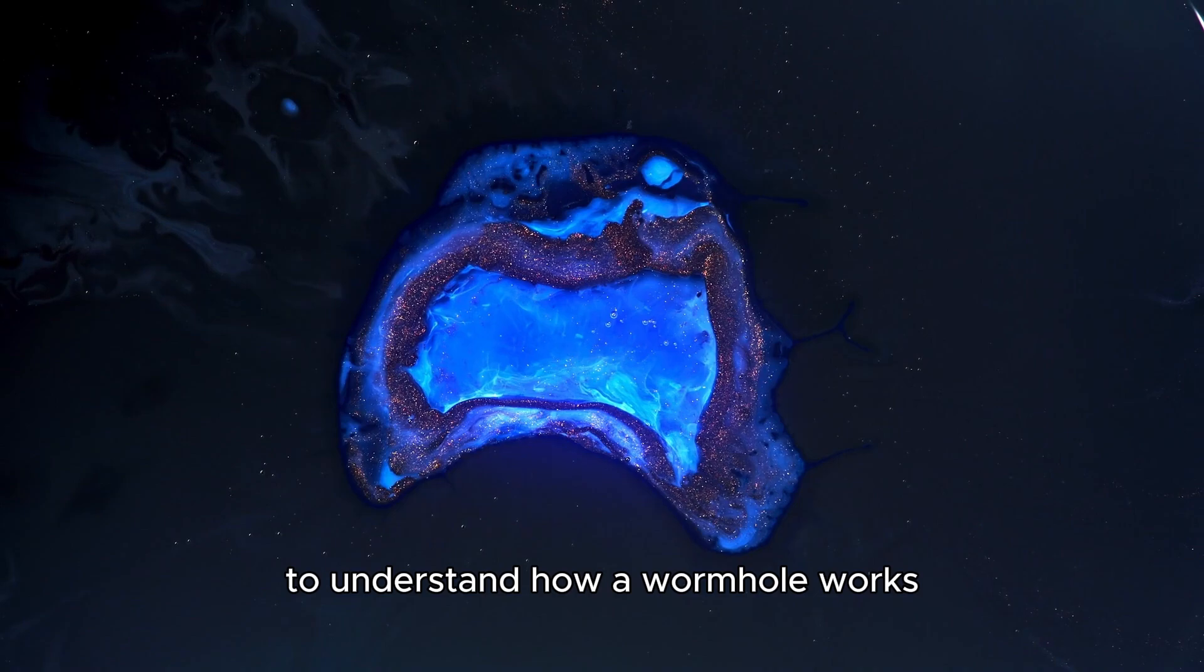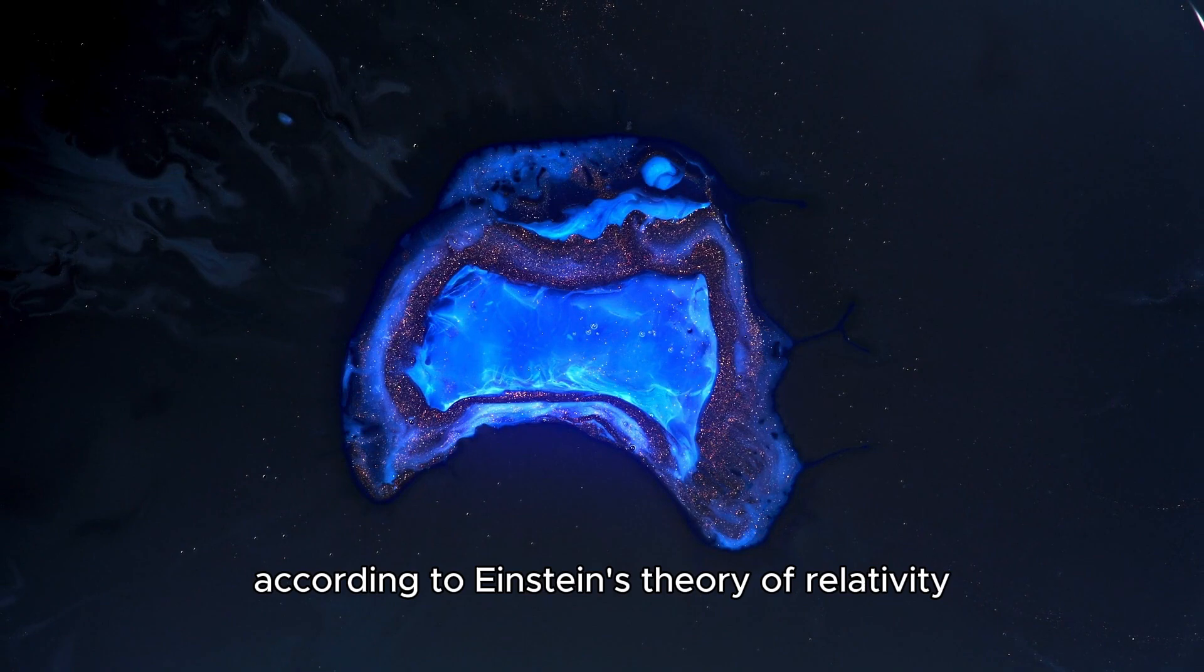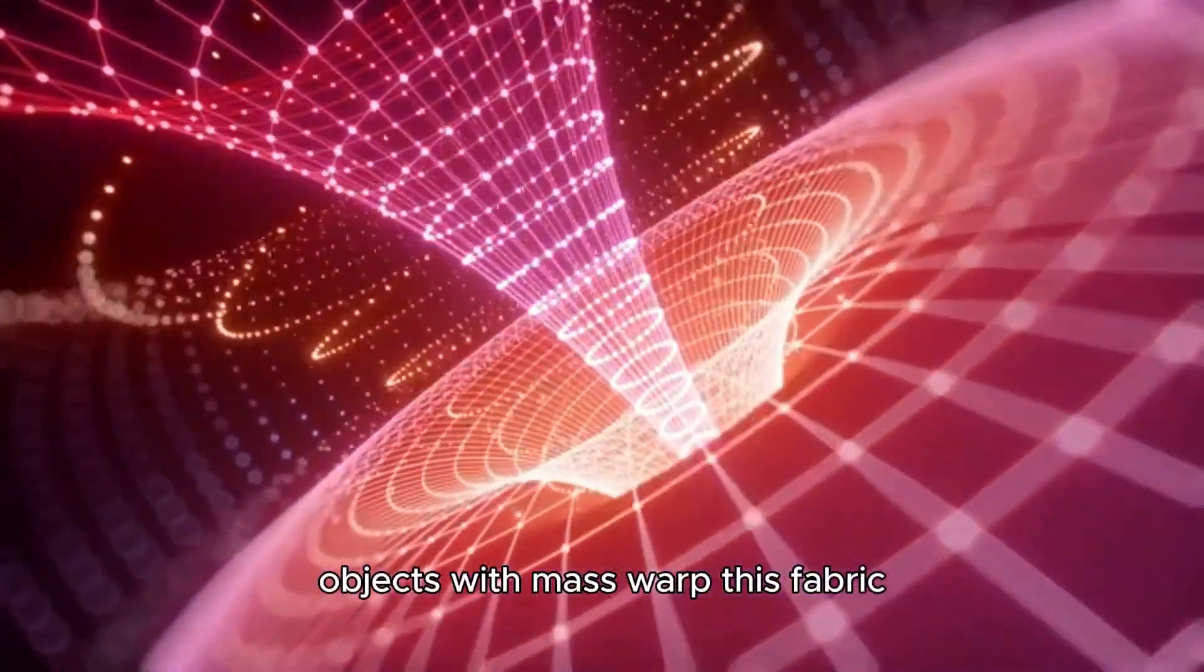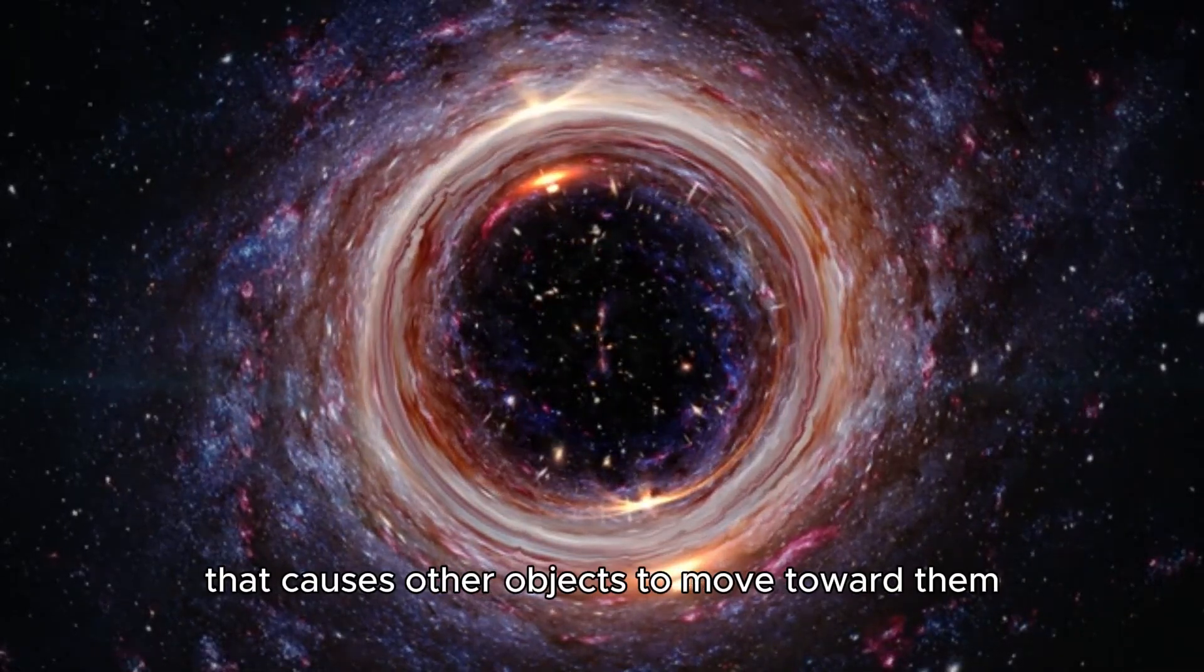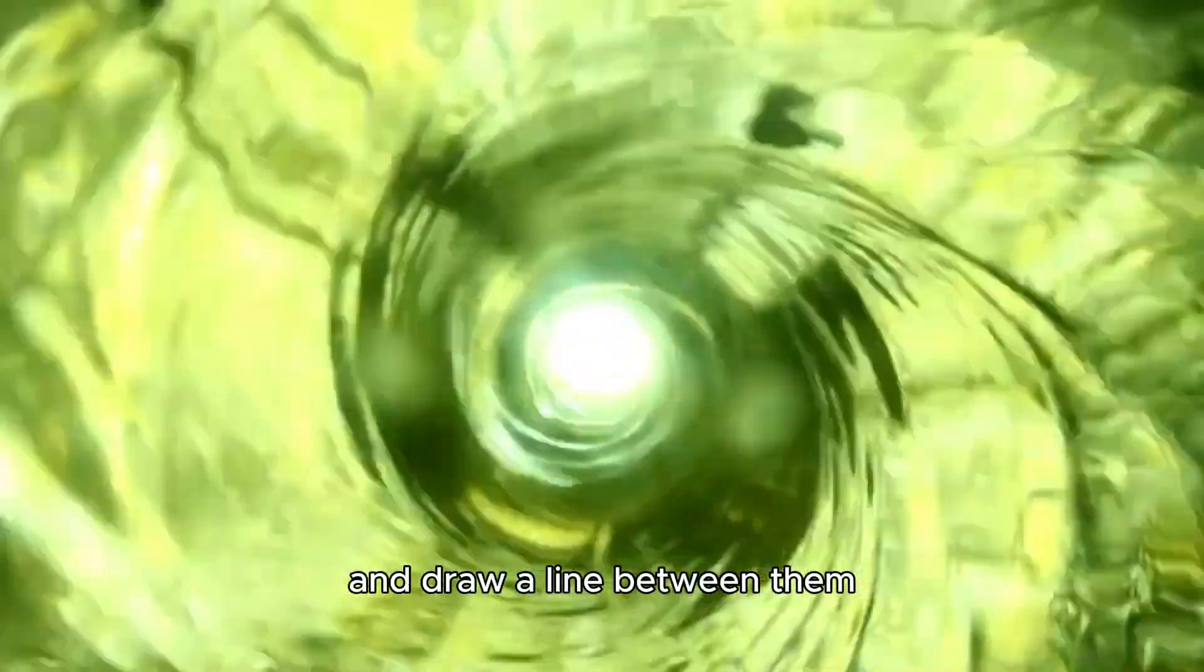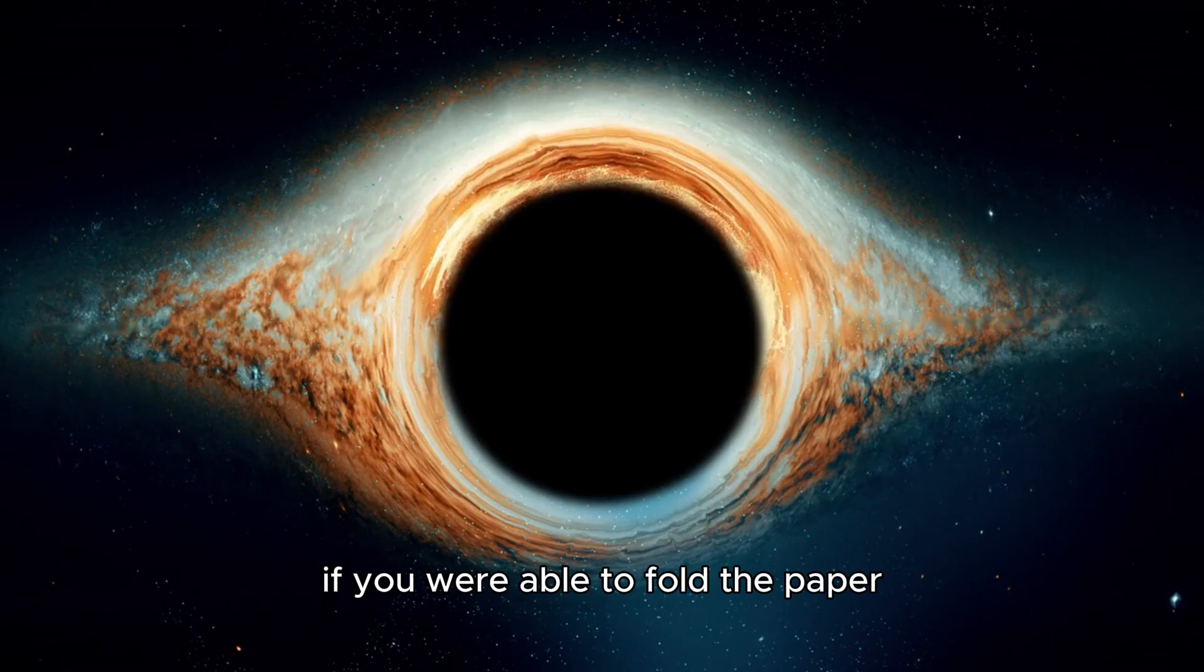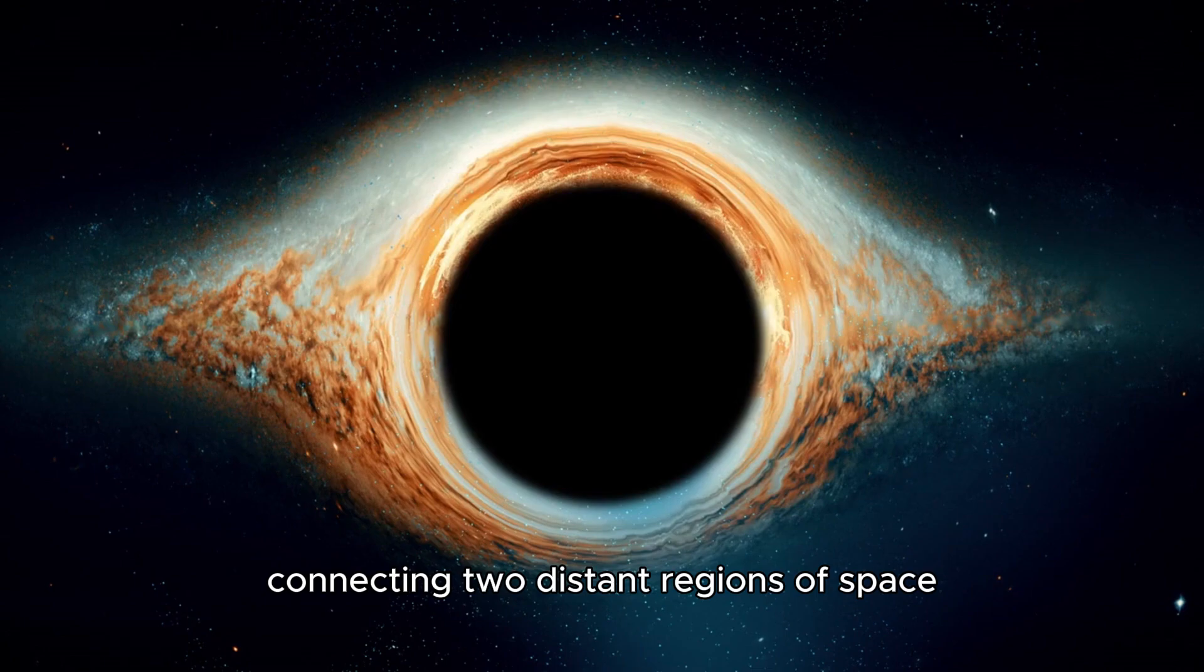To understand how a wormhole works, we must first grasp the concept of space-time. According to Einstein's theory of relativity, space and time are intertwined, forming a four-dimensional fabric. Objects with mass warp this fabric, creating a gravitational field that causes other objects to move toward them. Picture space-time as a sheet of paper. If you place two points on it and draw a line between them, that line represents the path objects take through space-time. If you were able to fold the paper, you'd create a shortcut between the two points, much like a wormhole connecting two distant regions of space-time.